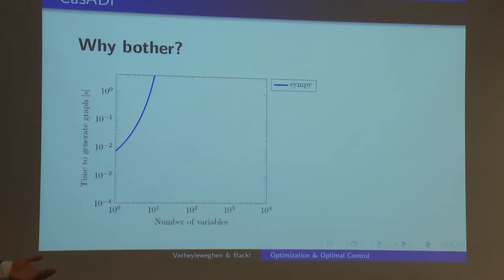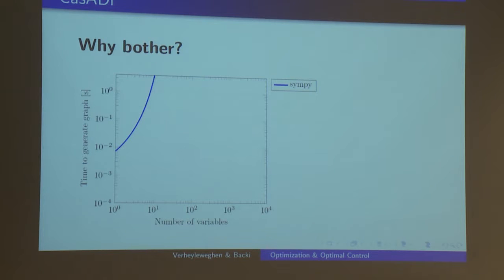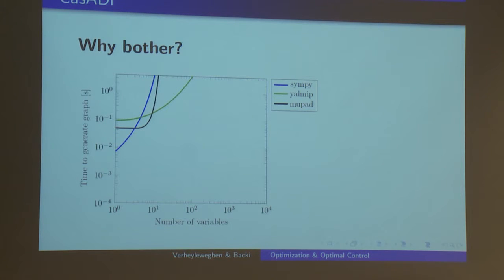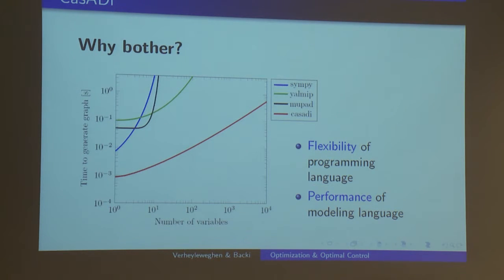Why bother with this? Some of you may remember a talk about SymPy, which can also generate symbolic expressions, Jacobians, and differentials. But if we plot the time to generate a graph versus the number of variables, SymPy scales reasonably well until the problem becomes large, then it slows down significantly. Other options like YALMIP and MuPAD are also quite slow. Comparing to CASADI, CASADI is much, much quicker. The reason to use CASADI is that it has the flexibility of a programming language but with performance comparable to a dedicated modeling language.